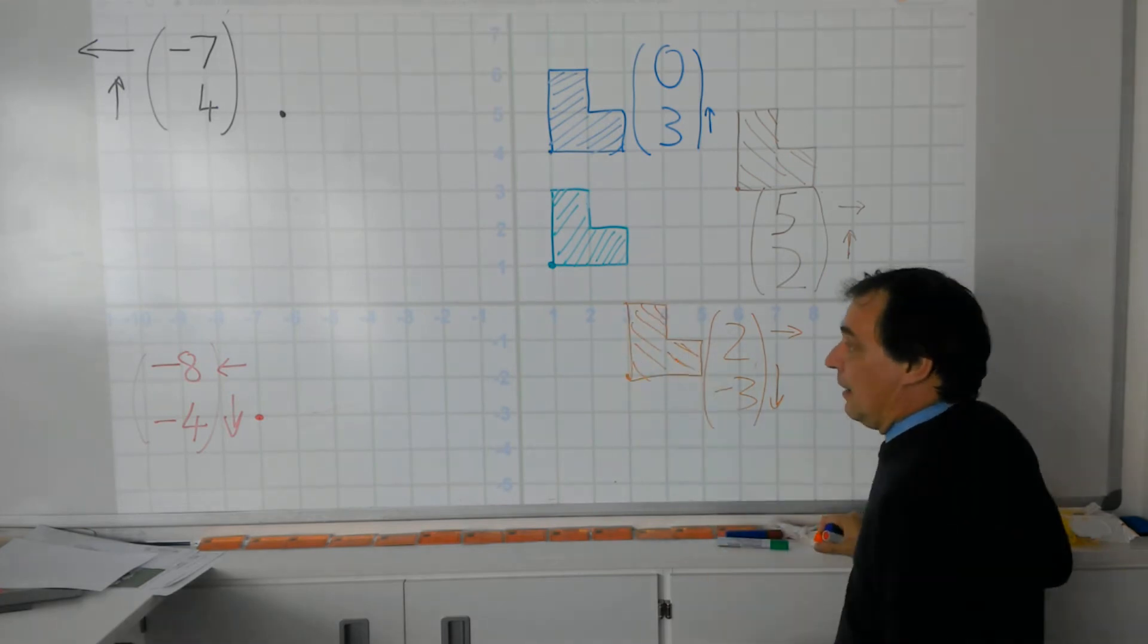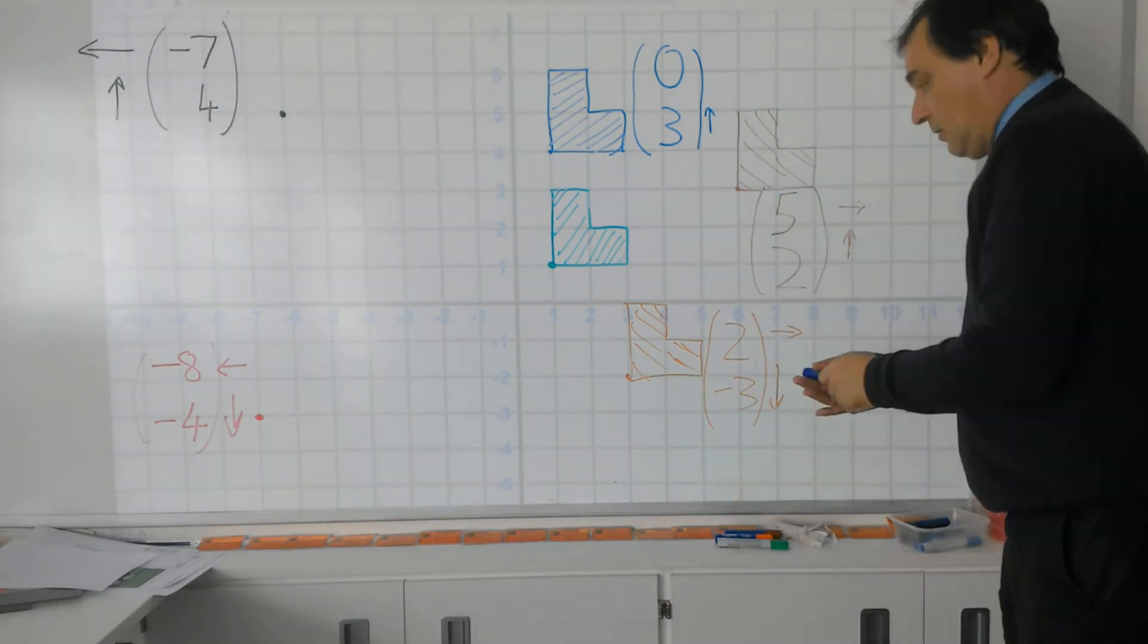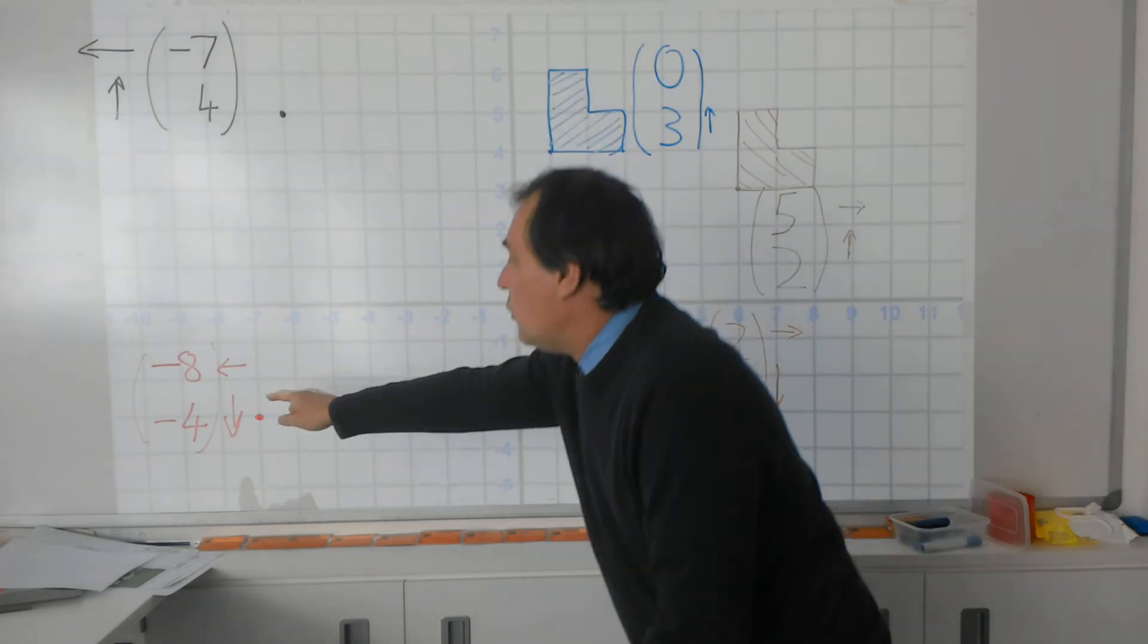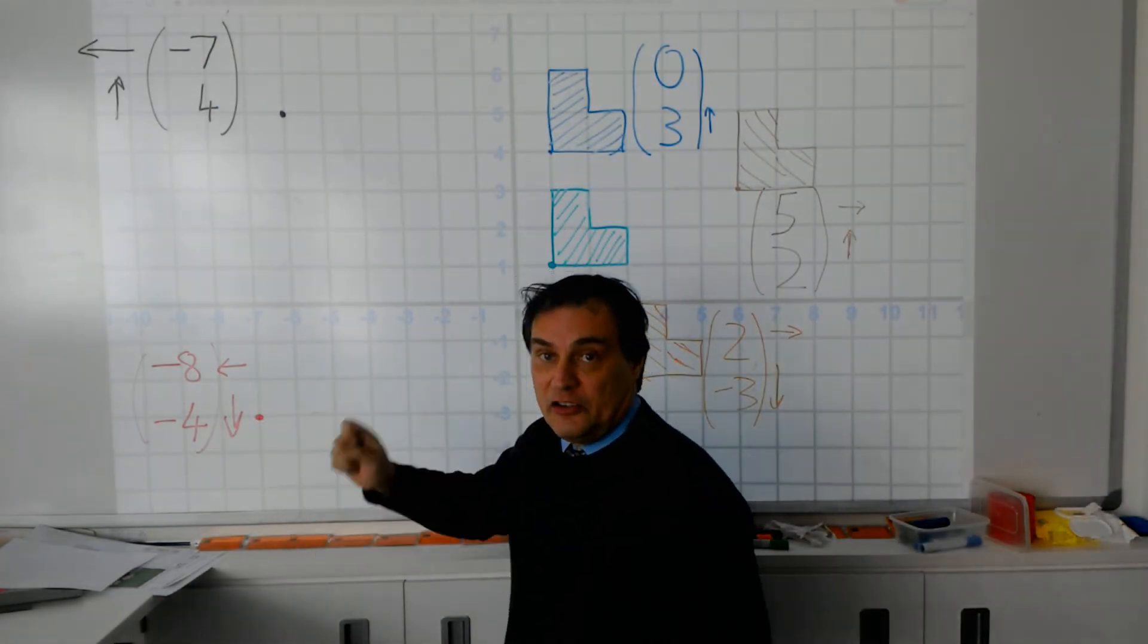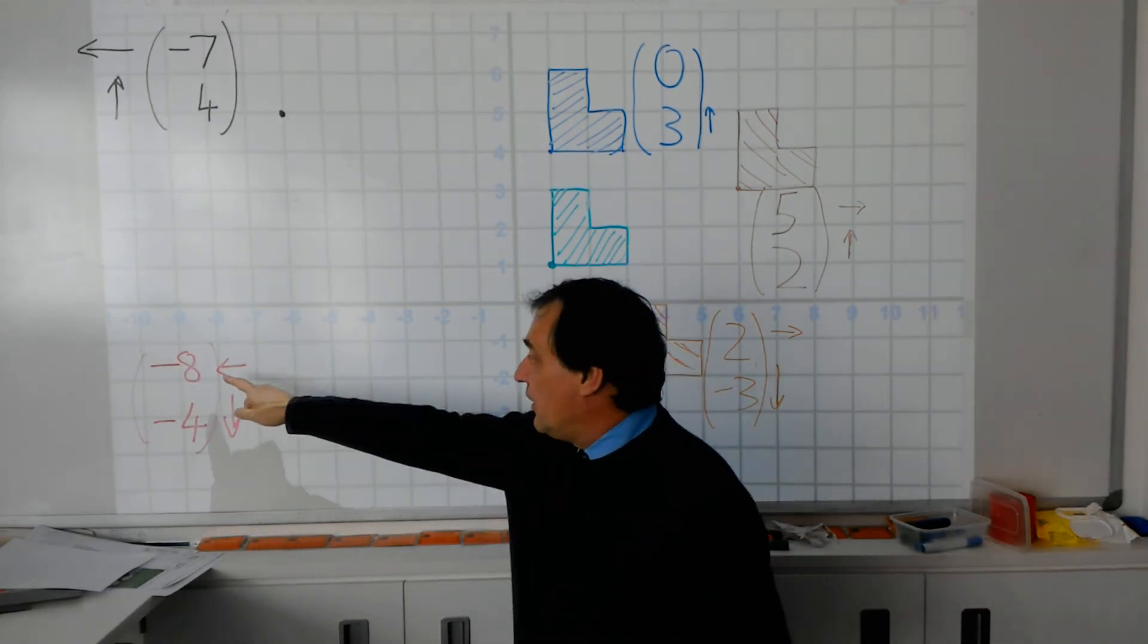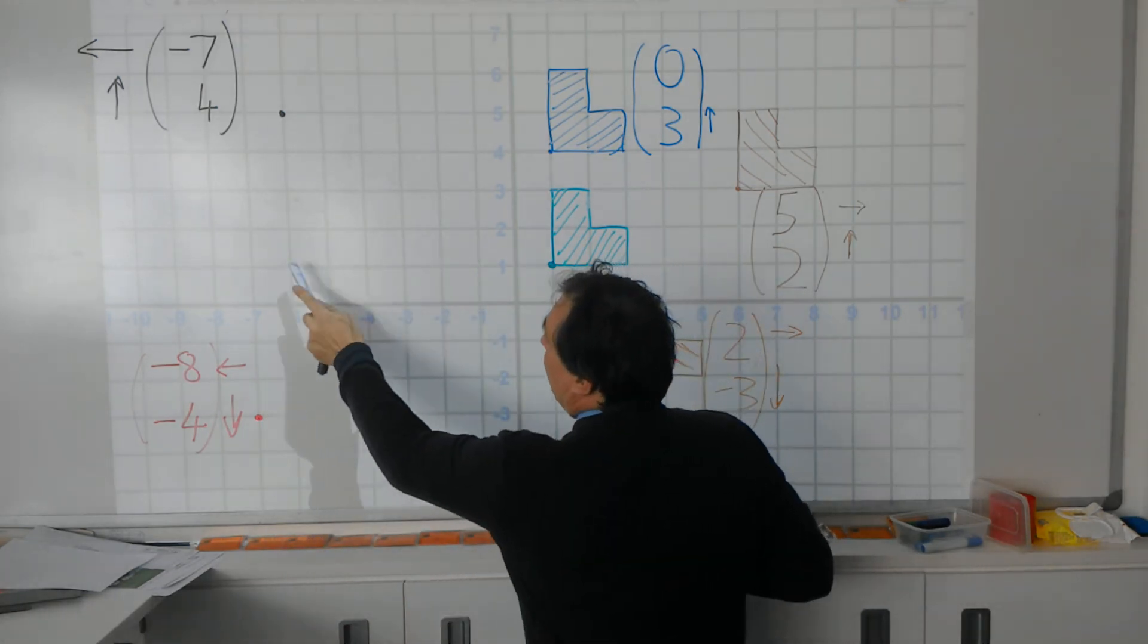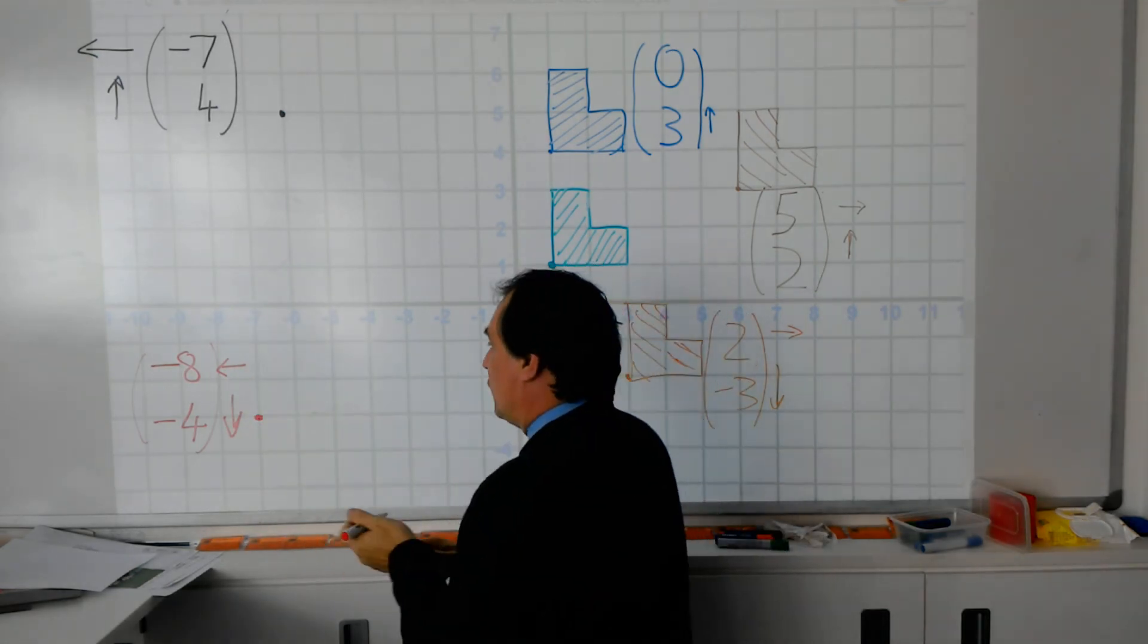A couple more to do. Next thing, let's go and have a look at the red shape down here. So this time we've got to move minus 8 and minus 4. So minus 8 actually means I move towards the window this time, and then down by 4. So counting again: 1, 2, 3, 4, 5, 6, 7, 8, 1, 2, 3, 4, and then I draw my red shape.